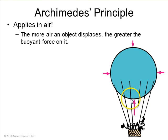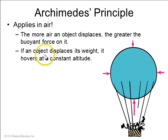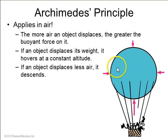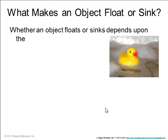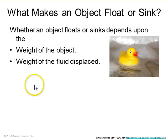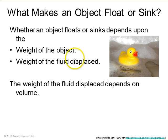Archimedes' principle also applies in air. The more air an object displaces, the greater the buoyancy force on it, and if it displaces an amount of air equal to the whole weight of the balloon, then it can hover at a constant altitude; if you shrink the balloon it will descend. Whether an object floats or sinks depends on the weight of the object, the weight of the fluid displaced, and the difference between those two weights.